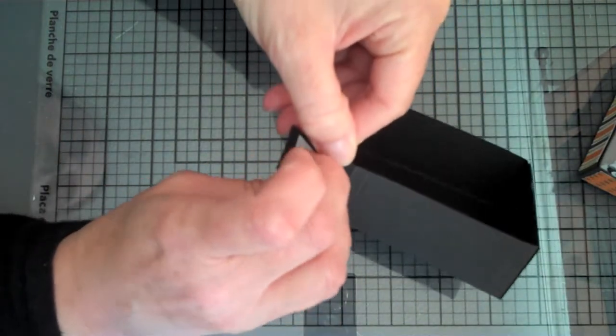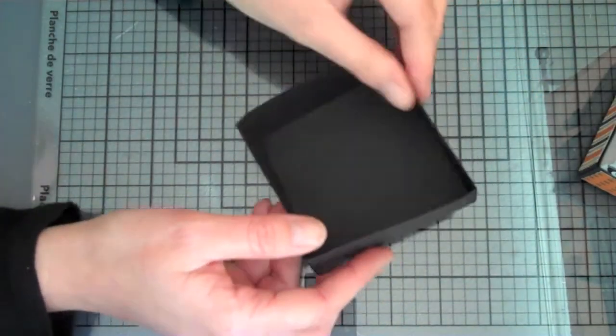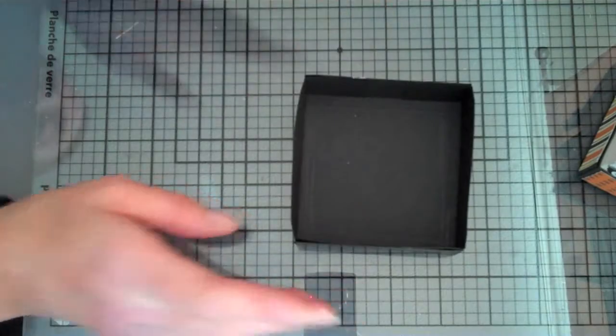When you're assembling and putting together these kinds of boxes that are going to be holding sturdier items like candy that's a little bit heavier, you definitely want to use sticky strip. Now I have the bottom of my box.